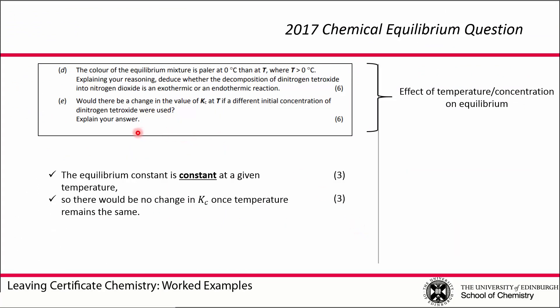Finally, part e asks whether the value of Kc would change at a different concentration. The whole point of an equilibrium constant is that it is constant at a given temperature. So at that temperature there will be no change in Kc if we change the initial concentration. If we added in extra amounts of reactants or products, the equilibrium would shift, but Kc will still be the same — the equilibrium constant remains constant at constant temperature.